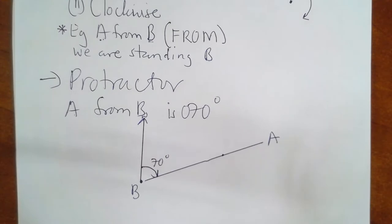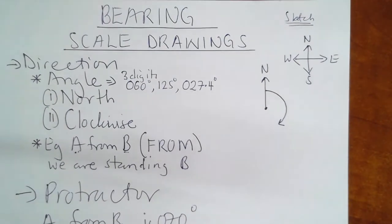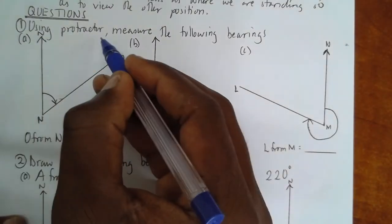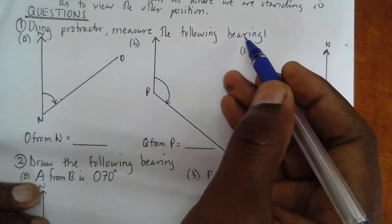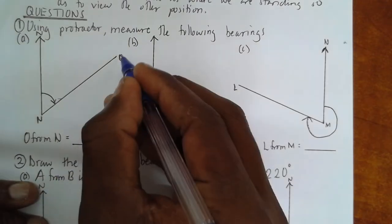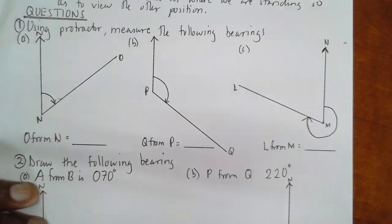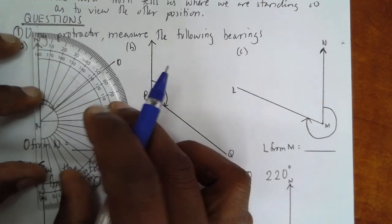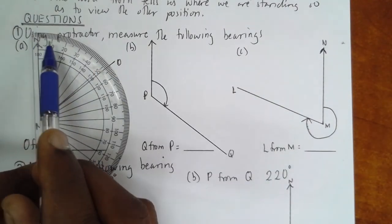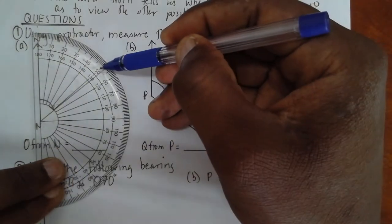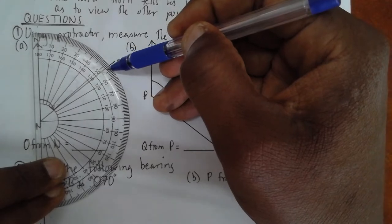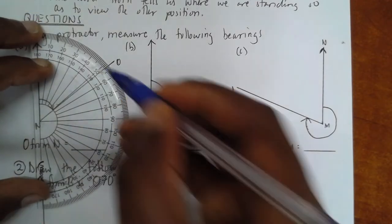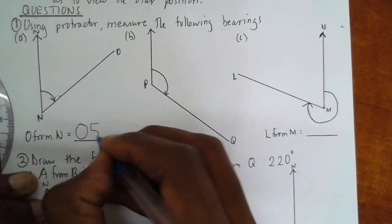This is what we do when we are dealing with bearing of scaled drawings. Now, let's look at more practical questions. Question number one. Using a protractor, measure the following bearings. O from N. It means I want to know the position of O when I'm standing at N. So I go to N. I keep my protractor at the corner there. After keeping my protractor at the corner, then I look at the zero value on the protractor. I start measuring 10, 20, 30, 40, 50. After 50, I go two small boxes means 51. So my bearing will be 52 because two small boxes. Each box is one. So one and two. So I will record as a bearing. I will start with zero, then 52 degrees.